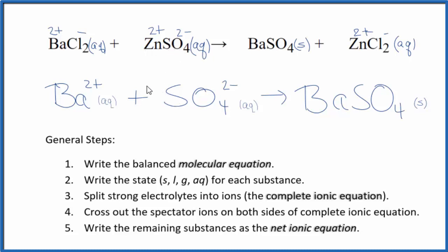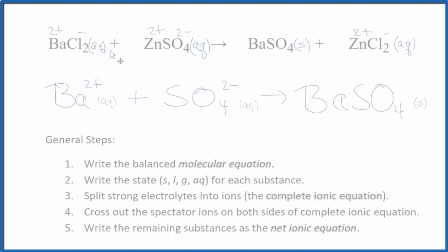You'll notice charge is conserved. We have two-plus, two-minus. They cancel out net charge of zero. Over here we have a neutral compound. And if you count the atoms up, they're the same on both sides as well. This is Dr. B with the balanced net ionic equation for BaCl2 plus ZnSO4. Thanks for watching.